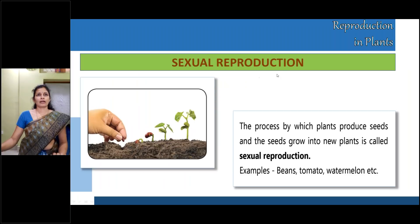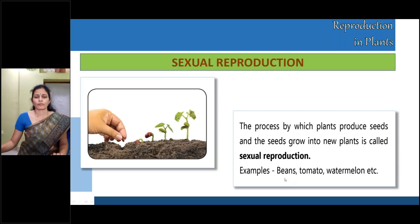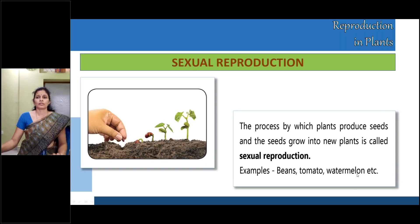Now let us learn about sexual reproduction. The process by which plants produce seeds, and the seeds grow into new plants, is called sexual reproduction. Examples are tomato, beans, watermelon, and lady's finger. See the picture — a seed is sown and then it grows into a plant. This is called sexual reproduction.